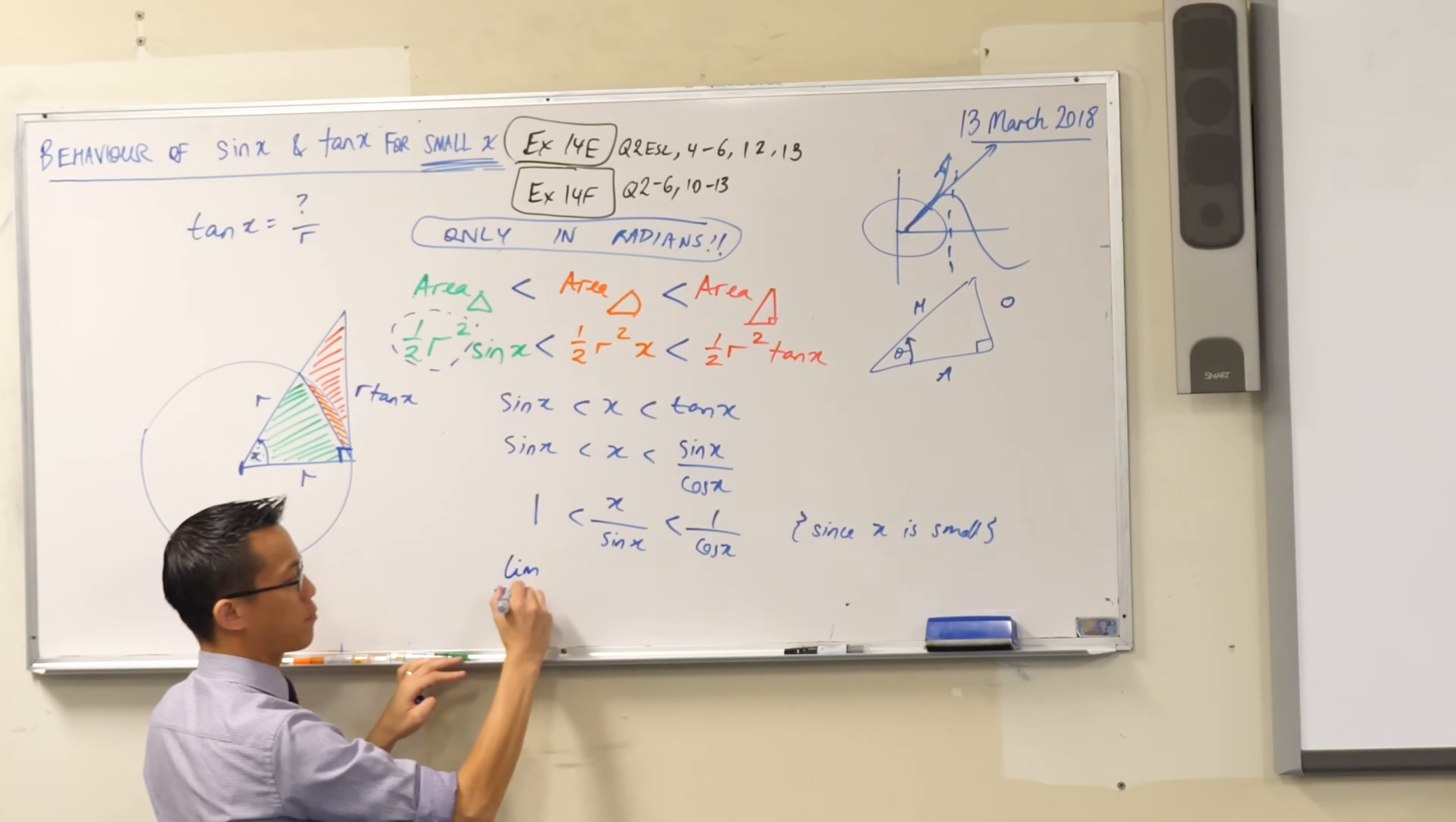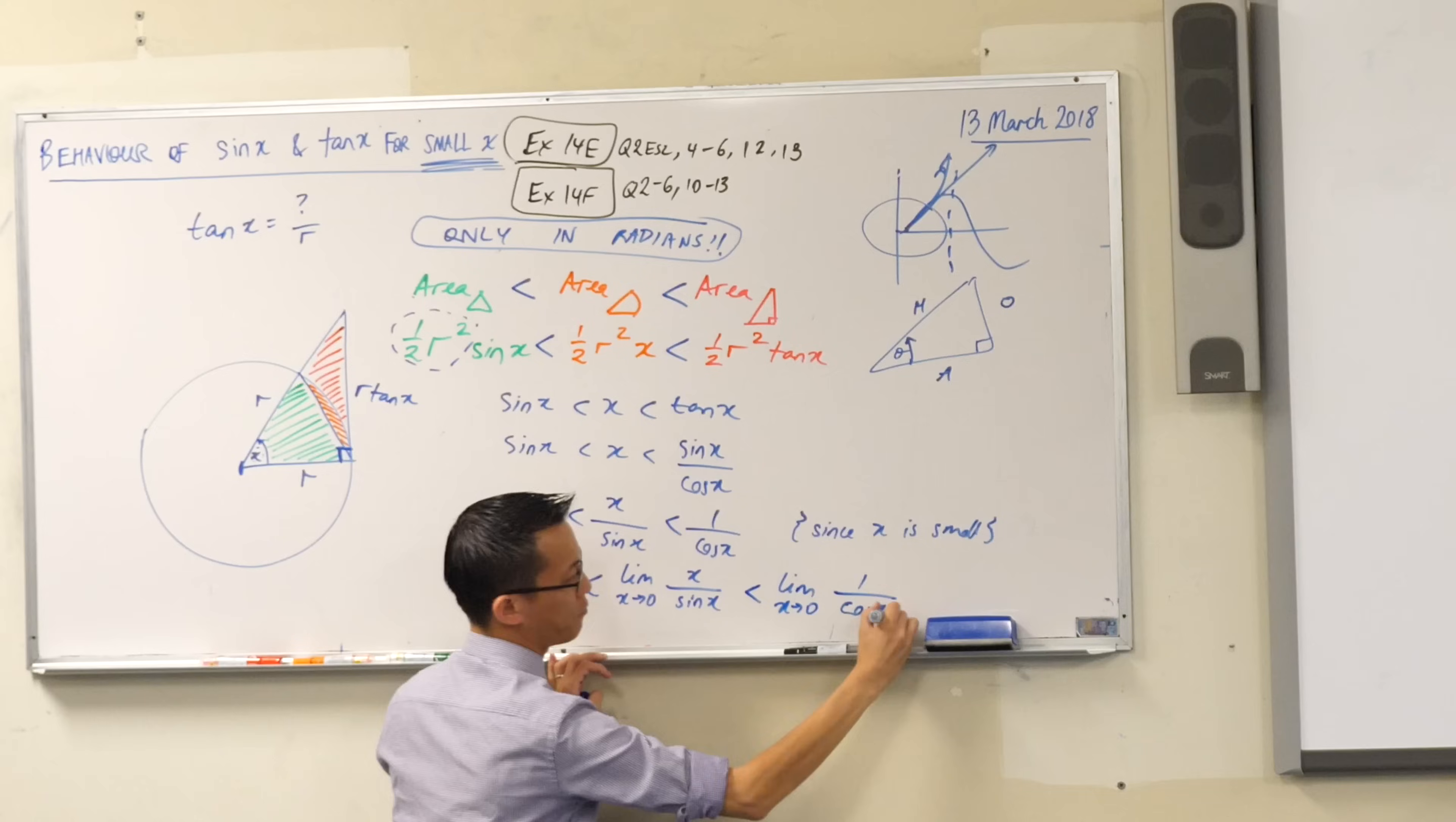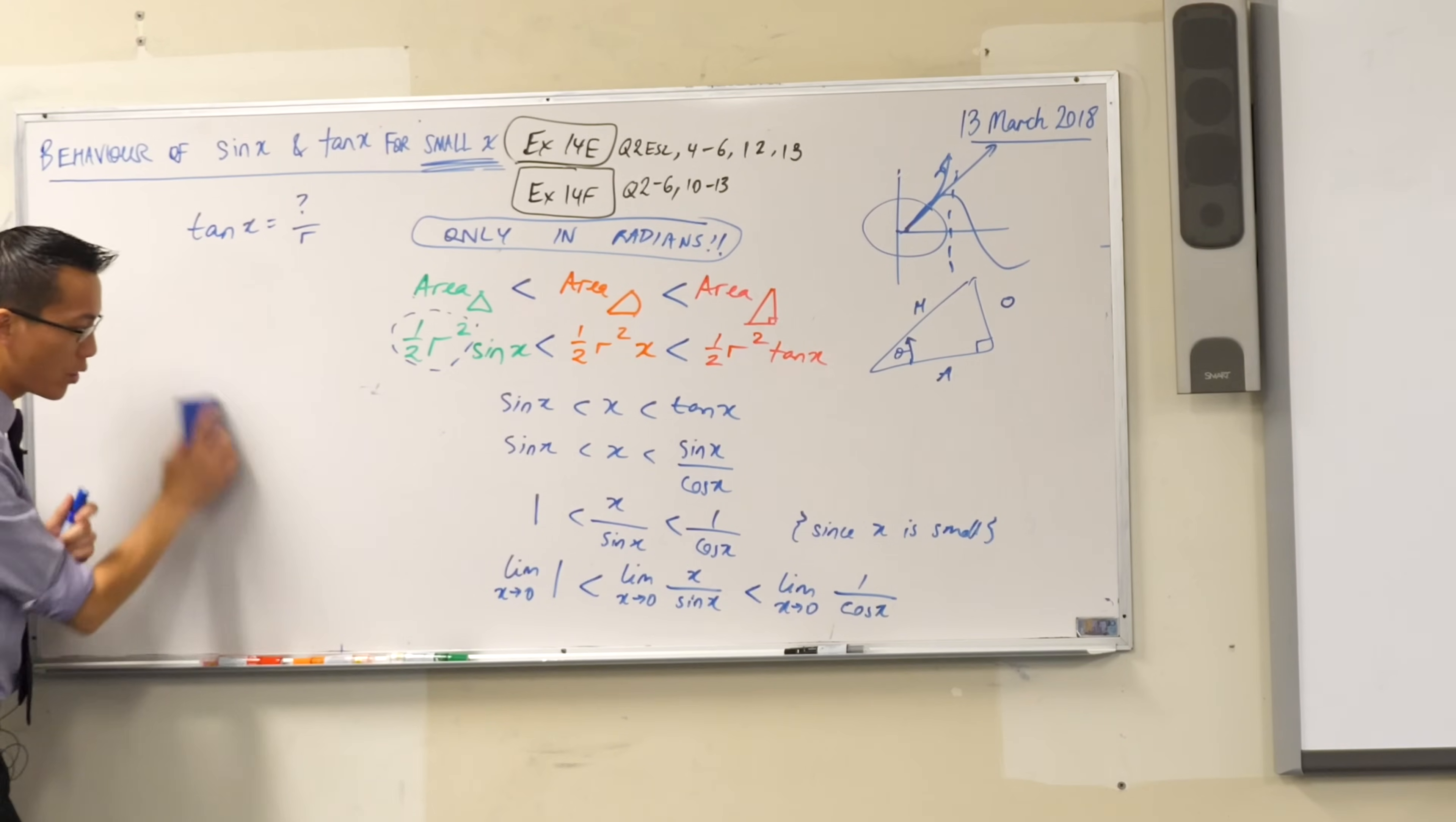So let's do it. The limit as x approaches zero of this will be less than the limit as x approaches zero of this, which is less than the limit as x approaches zero of this. Okay. Again, a poorly designed board. Sorry. Bit of a theme of my work, as you can see. I think you're okay with this diagram. You've probably got it down well and truly now, so it's going to disappear.